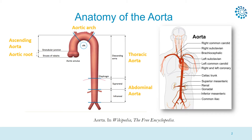The aorta is divided in different parts: the ascending aorta, the aortic arch, and the descending aorta. The descending aorta can be divided also into thoracic and abdominal aorta.